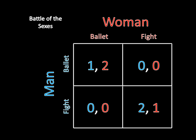The man's most preferred outcome is going to the fight with the woman there; his second best is going to the ballet together. If they mismatch — man goes to the fight while the woman goes to the ballet, or vice versa — that's equally bad for both. The woman most prefers being at the ballet with the man, second most prefers going to the fight together, and a mismatch leaves her very sad. So there are mixed motives: you want to go where you prefer and you need the other person there, creating strategic tension around coordination.